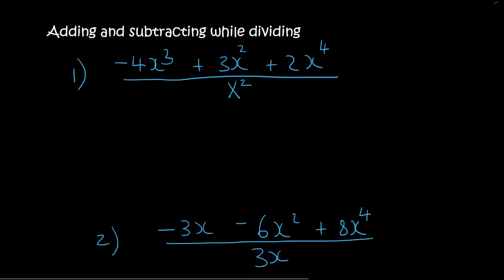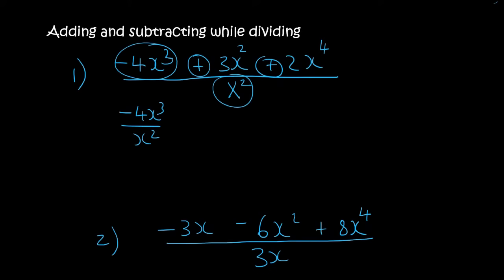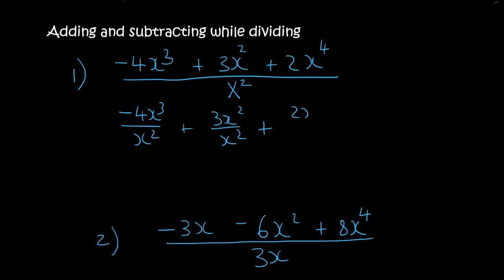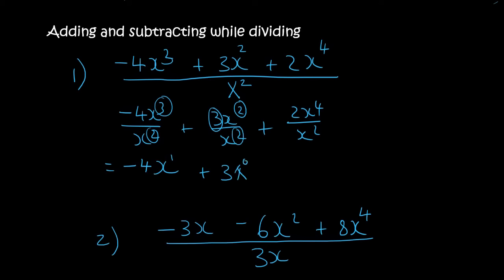Maybe pause the video and try these two. When we've got pluses and minuses in between, we isolate. So we say minus 4x³ over x², then plus 3x² over x², and then 2x⁴ over x². So 4 stays as minus 4. For the x's, 3 minus 2 is 1. This just stays 3 — x² and x² becomes x⁰ which is just 1, so you can ignore that. Then this becomes 2x, and 4 minus 2 is 2. So the final answer is minus 4x plus 3 plus 2x².